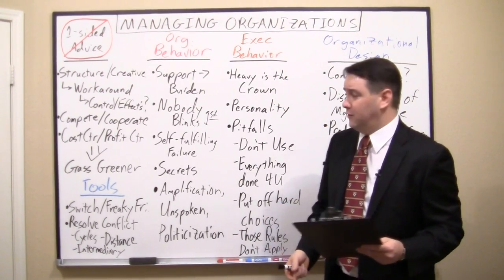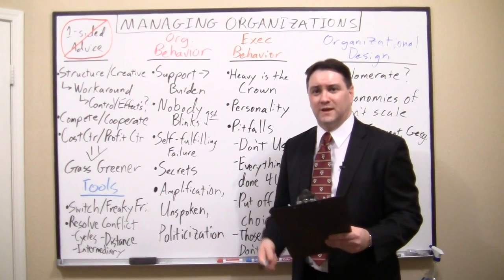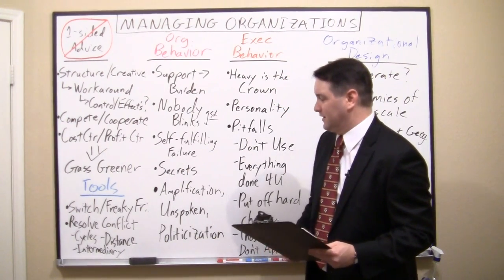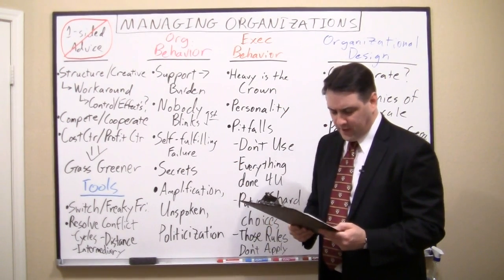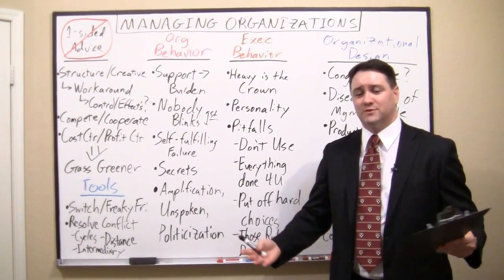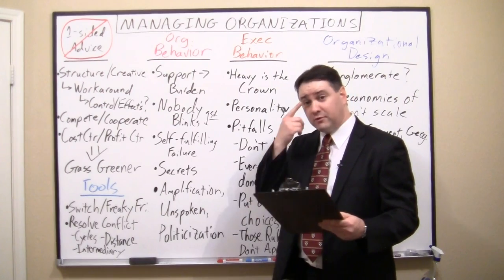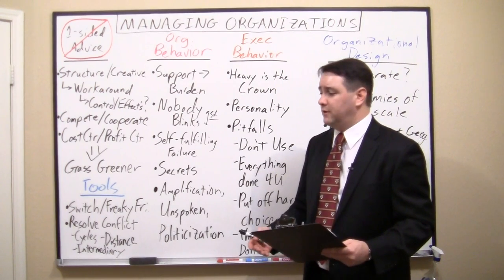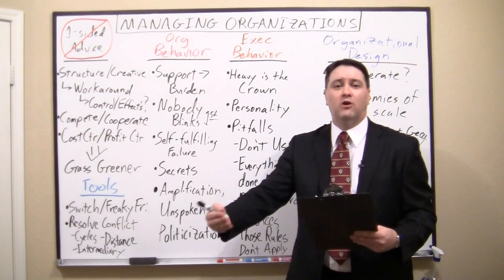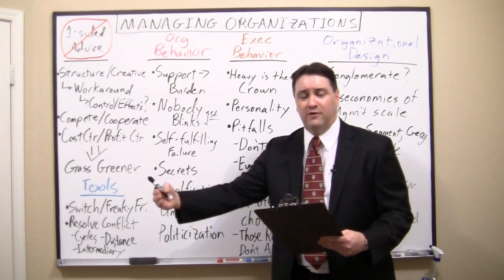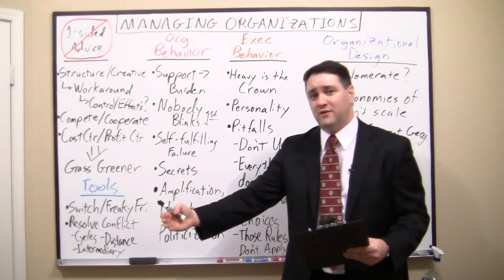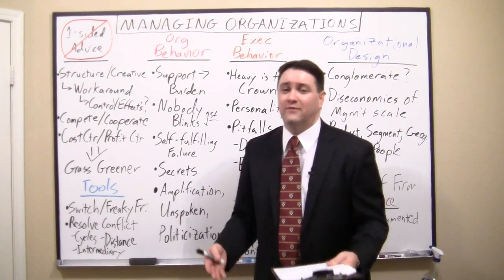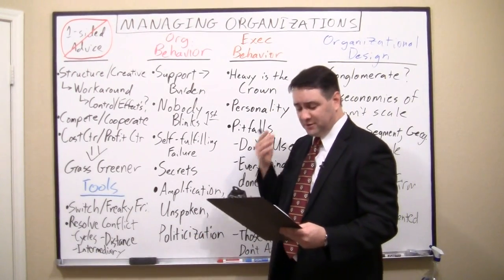Another example is what I call the self-fulfilling failure: if everybody thinks a division, market segment, or product is a dog, nobody wants to work on it, so it never gets talent and actually goes nowhere. I also want to talk about secrets. Information has value and is a form of power, so if you have a secret you'll share it to curry favor with someone — and then they tell someone else — and eventually everybody knows. That's why secrets are so hard to keep in organizations.